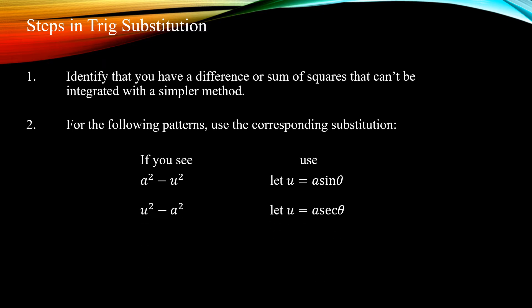If you see the opposite, u squared minus a squared — a difference of squares where the function comes first and the constant comes second — the substitution to use is: let u equal a secant theta. If you see the sum of squares, a squared plus u squared, which is identical to u squared plus a squared, you use the substitution: let u equal a tangent theta. So you insert one of these three trigonometric relations in place of the difference or sum of squares.